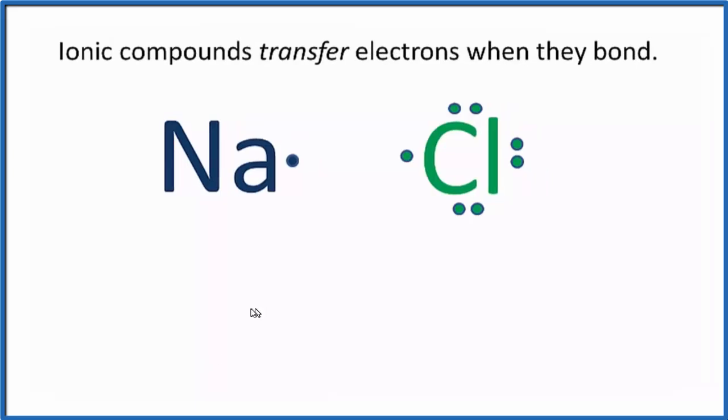So you might ask, how does an atom become an ion? Well, sodium has one electron in its outer shell. It'll lose that electron when it forms a chemical bond with chlorine. So sodium ends up having a one plus ionic charge.